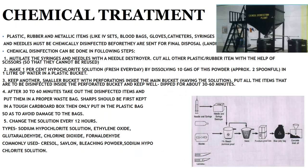Next is chemical treatment. Plastic, rubber, and metallic items like IV sets, blood bags, gloves, catheters, syringes, and needles must be chemically disinfected before final disposal to a landfill. The steps are: first, mutilate the syringes and needles with a needle destroyer; then cut all other plastic and rubber items with scissors so they cannot be reused. Then prepare a one percent hypochlorite solution fresh every day by dissolving 10 grams of powder in one liter of water.